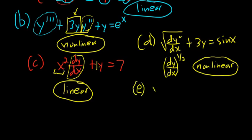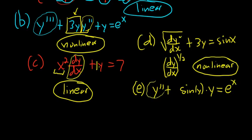Example E: y'' + sin(y) · y = e^x. The order is 2. This is non-linear because you have sin(y) — a function of y — in front of y. You can only have pure functions of x in front of y and its derivatives. So this is non-linear.